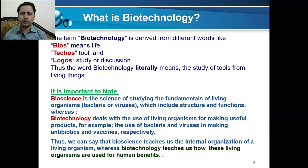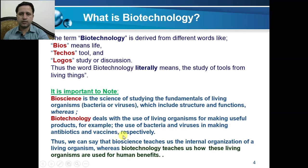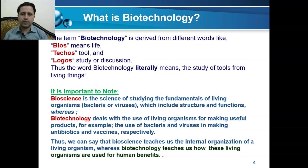In bioscience, we study the fundamentals of living organisms — their structures and functions at a very small scale. However, in biotechnology, we use different organisms and their products for making useful products. For example, we use bacteria to make antibiotics and viruses to develop vaccines. Thus, bioscience is the science of studying the fundamentals of living organisms, while biotechnology applies that knowledge commercially.